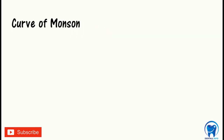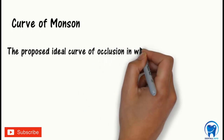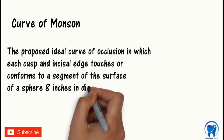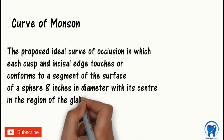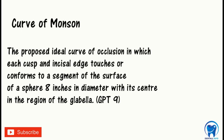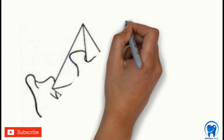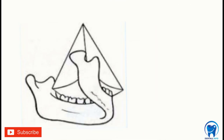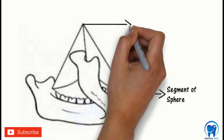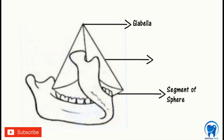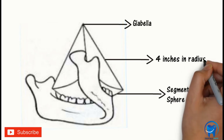Now let's understand the next curve which is the curve of Monson. It is defined as an ideal curve of occlusion in which each cusp and incisal edge touches or conforms to a segment of the sphere of 8 inches in diameter with its centre in the region of the glabella, as per GPT-9. The segment of the sphere has its centre at the glabella and the radius of the sphere is 4 inches. This sphere is the curve of Monson.